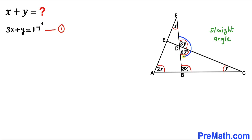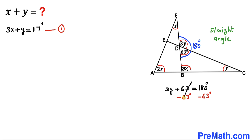Now let's focus on the straight angle, which equals 180 degrees. Therefore we can write 3y plus 63 degrees equals 180 degrees. Subtracting 63 degrees from both sides, 3y equals 117 degrees. So angle y turns out to be 39 degrees.